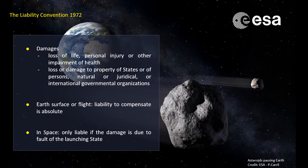Depending on the scenario, the liability for caused damages will differ. If damage is caused by the space object on the surface of the Earth or to an aircraft in flight, the liability to compensate is absolute. But if damage is caused to another space object in space, the launching state is only liable if the damage is due to fault on the part of the launching state or its nationals.